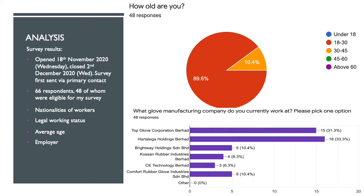Beyond that, most of the workers are between 18 and 30 years old, with a small minority of around 10% between 30 and 45. None of my respondents are over the age of 45. Most of the workers work for Topglove or Hartalega, with some working for other smaller glove manufacturing corporations like Brightway, Cosun, CE, and Comfort. This represents the broader distribution of workers across the industry.